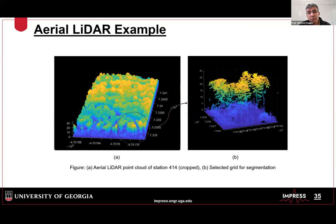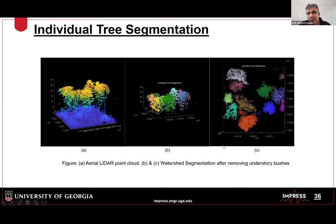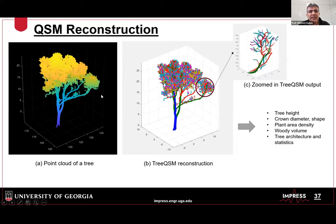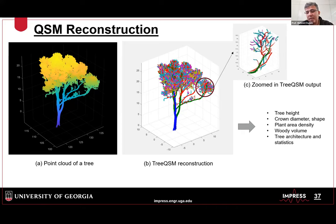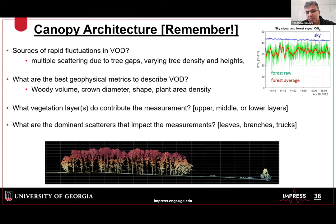The LiDAR data contains rich architectural information: you can segment individual trees in the scene and convert each tree's point cloud into cylinders for use in electromagnetic models. From those cylinders you can extract vegetation parameters and try to correlate them with VOD measurements. We are working on exploiting this to understand how VOD depends on canopy architecture, so that LiDAR can provide the architectural information needed to understand the relationship between VOD and those structural parameters.